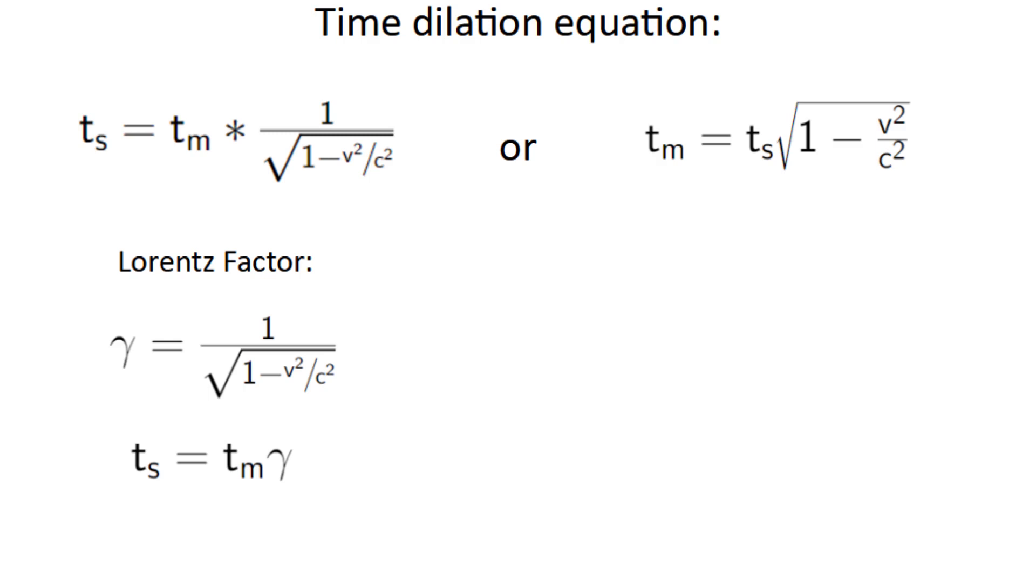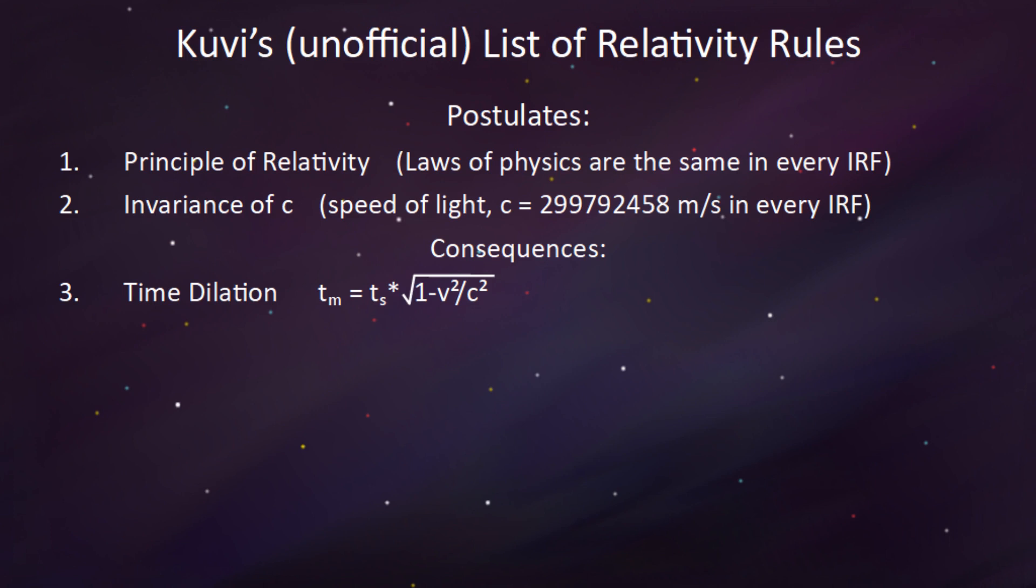In this case, the square root term is called the alpha factor, and you can write it as tm equals ts times alpha, but I prefer to just stick with the full equation. So now we can add time dilation to the list as the third rule.